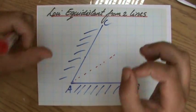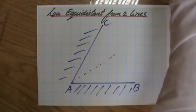So how do we do that? We have to construct the angle bisector. Well done.